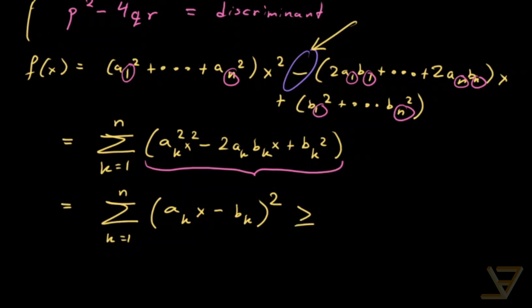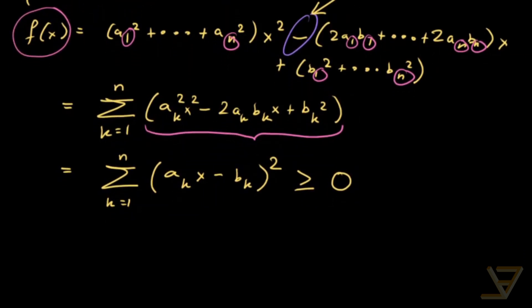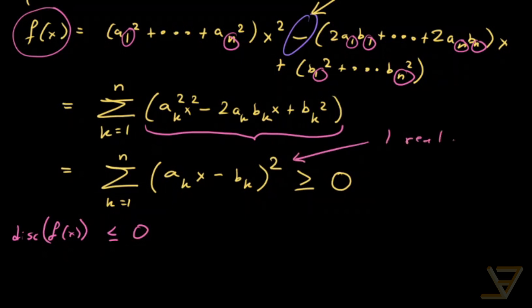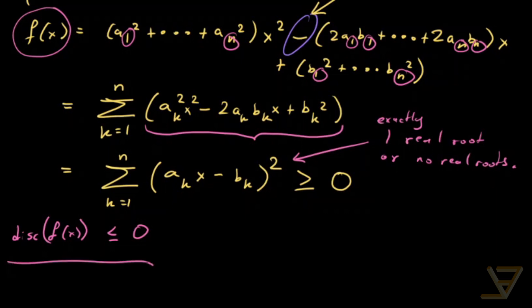And we notice that this is in fact a perfect square, so we write it as the sum from k equals 1 through n of (akx minus bk) squared. Since this is the sum of squares, this is going to be greater than or equal to 0. And what that means is that the discriminant of f(x) is going to be less than or equal to 0, because this quadratic either has exactly one real root or no real roots. That's what happens precisely when the discriminant is less than or equal to 0, and so that proves the Cauchy-Schwarz inequality.